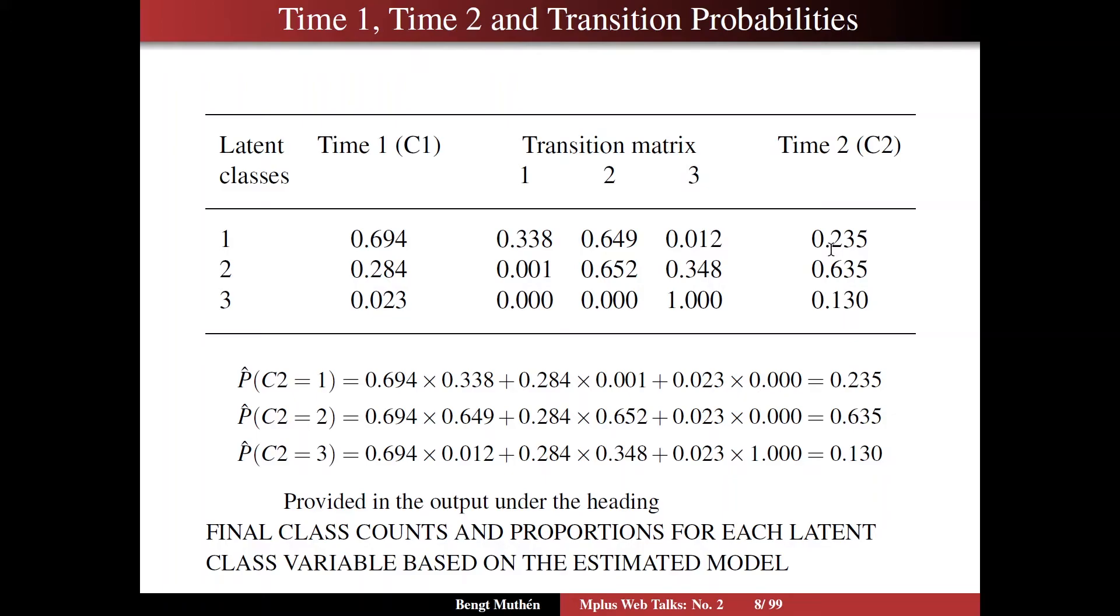How do we do that? Well, if you look here, we can ask ourselves, how can we end up in class one at time two? C2 equals one. Well, we could start time one and stay in time one. Sorry, start at class one and stay in class one. That's this product, that probability. Another possibility is that we start in class two and fall back into class one. Very small chance, but we write it out here. Or you could start in class three and fall all the way back to class one with zero probability. If you add these up, you get the value 0.235.